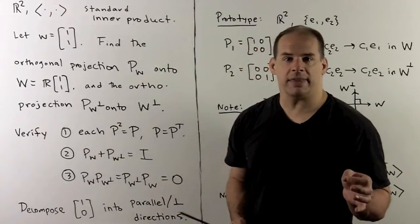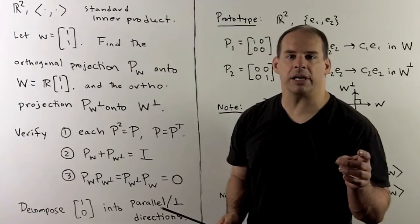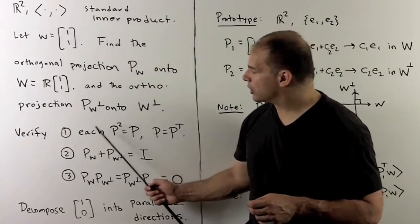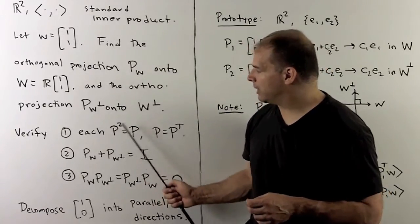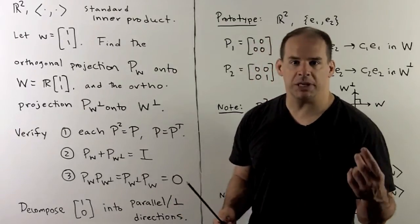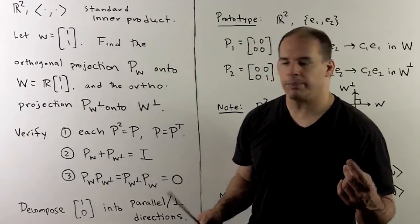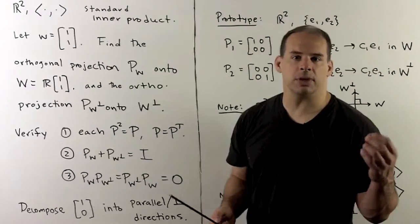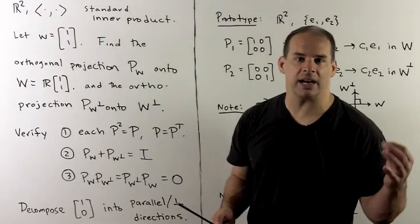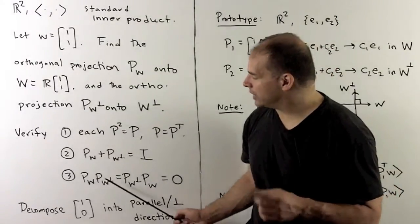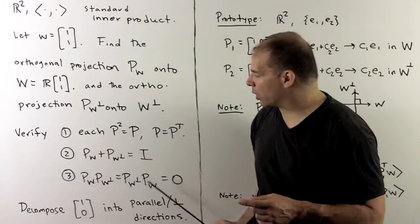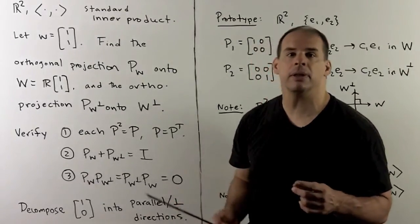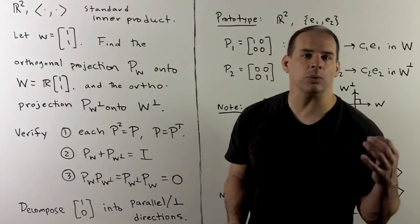Once we've done that, we're going to verify the following properties for orthogonal projections. We'll want that each P² is equal to P, and P equals P transpose. We'll want that P_W plus P_{W⊥} is the identity. And if we take the products in either order — P_W times P_{W⊥} — they're both going to be equal to zero.